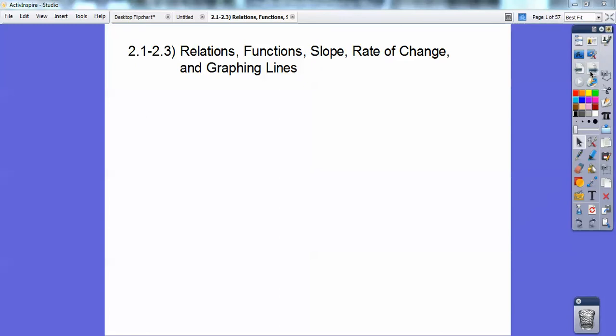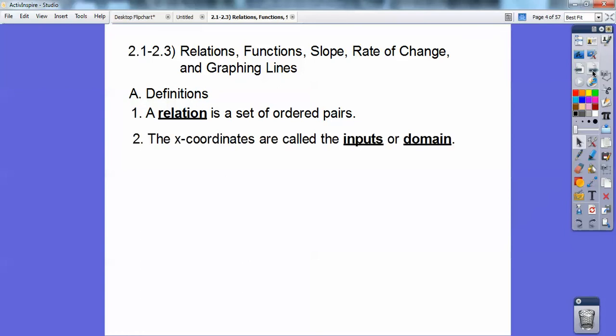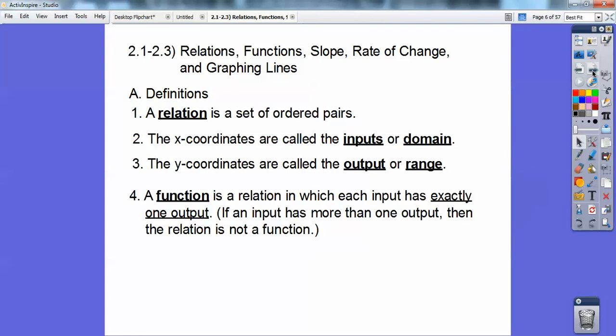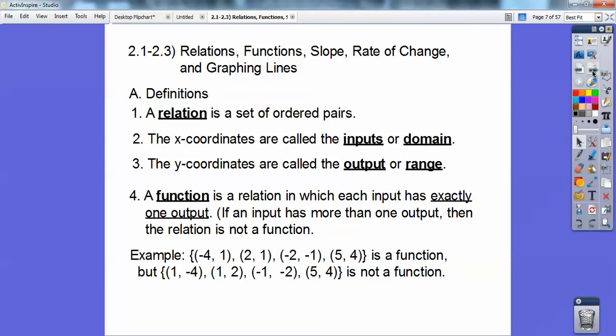This is on relations, functions, slope, rate of change, and graphing lines, all from Algebra 1. So here's some review definitions, and I'm going fast, so you have to pause it if I'm going too fast if you need to write things down. A relation is just a set of ordered pairs. The x-coordinates are called the inputs or the domain. The y-coordinates are called the outputs or the range. A function is just a relation in which each input has exactly one output. In other words, there's no repeating x's. You can have repeating y's, you just can't have repeating x's.